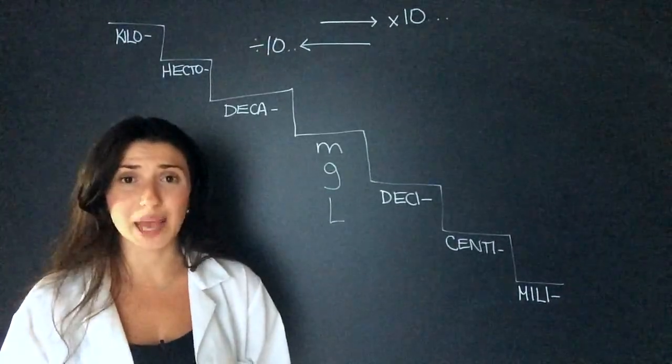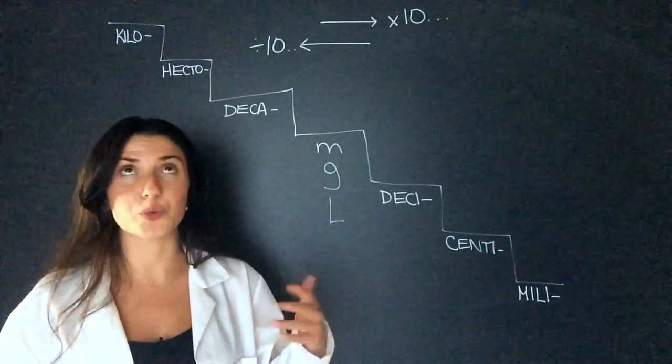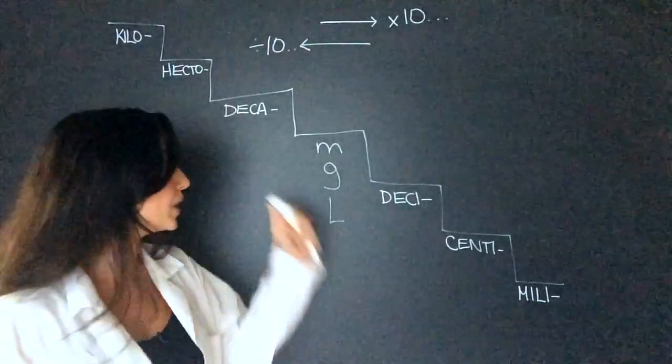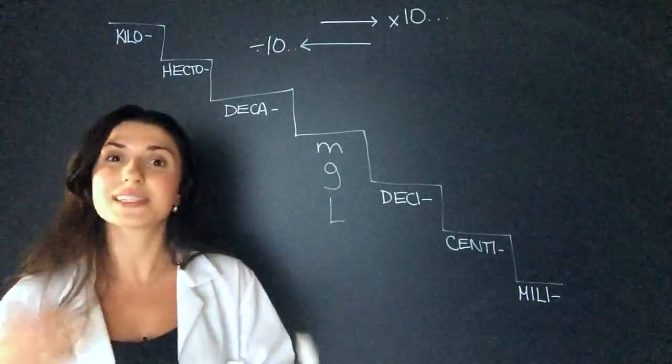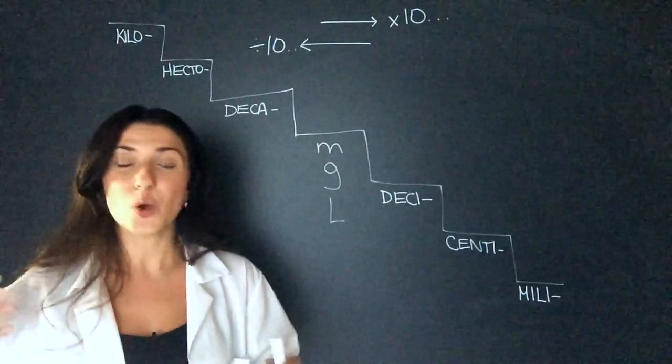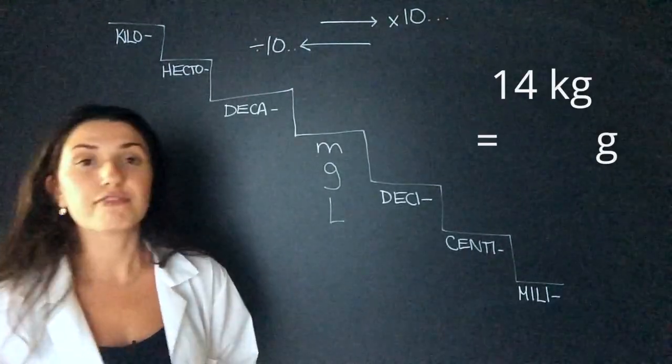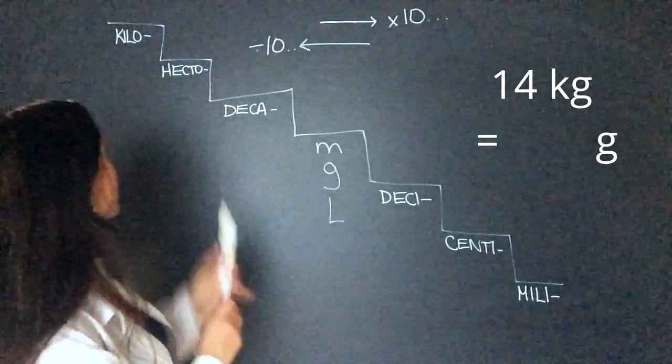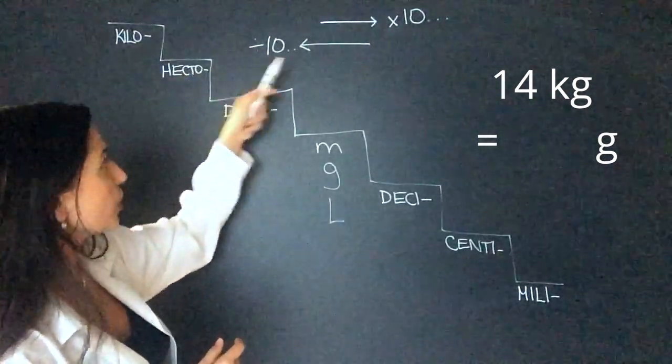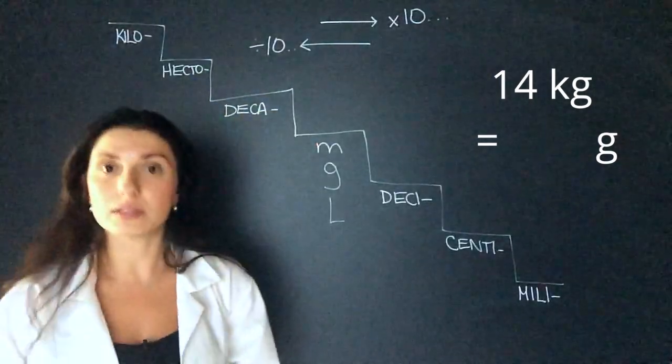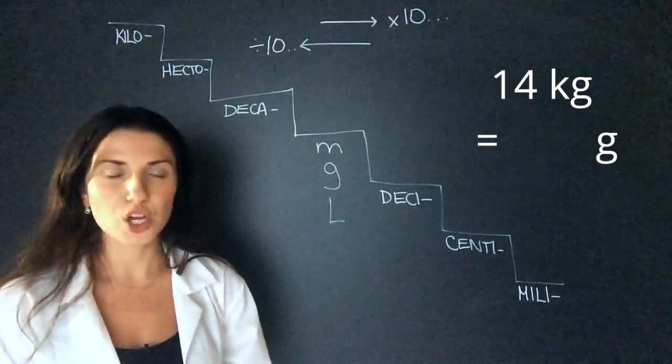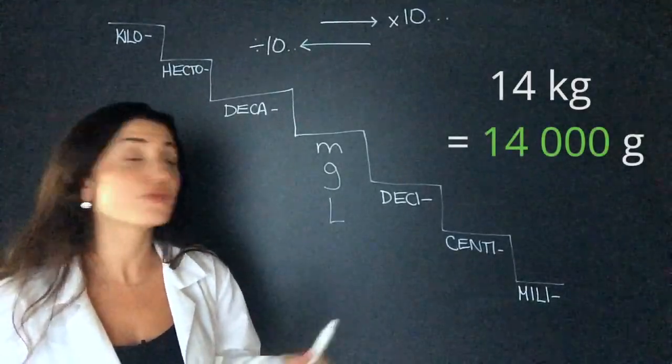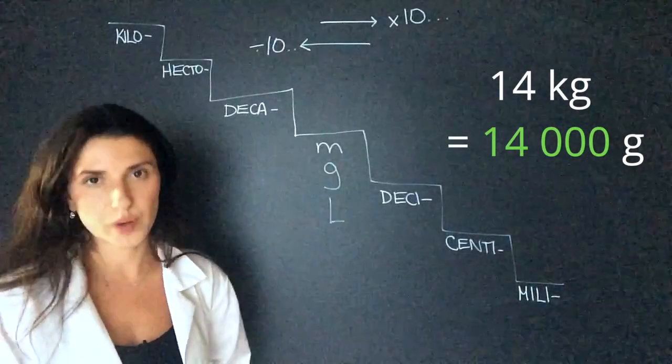Another really popular one in chemistry is the kilogram and gram conversion. Usually when we have moles, we need our mass in grams, but we'll see later with thermodynamics, we sometimes need to use kilograms. We have 14 kilograms and we need that in grams. We're going to go one, two, three, and we're going to multiply by 1000. So we're moving that decimal three places. We now have 14,000 grams of a substance.